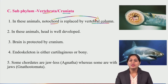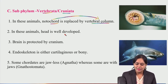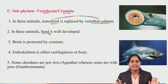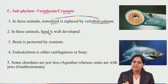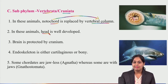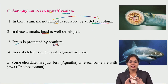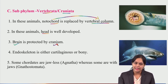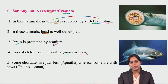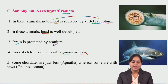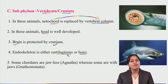In vertebrates, the head is well developed — they have a brain protected by the cranium, just like our skull. The endoskeleton is either cartilaginous or bony. Some vertebrates have jaws, while some are jawless.